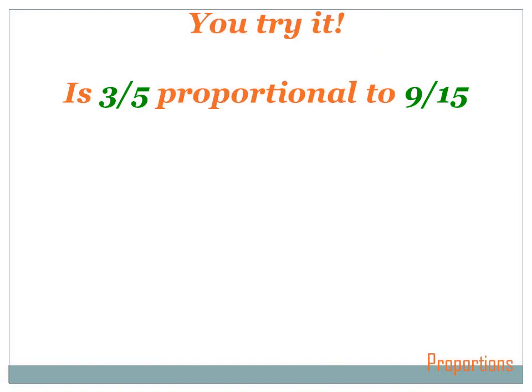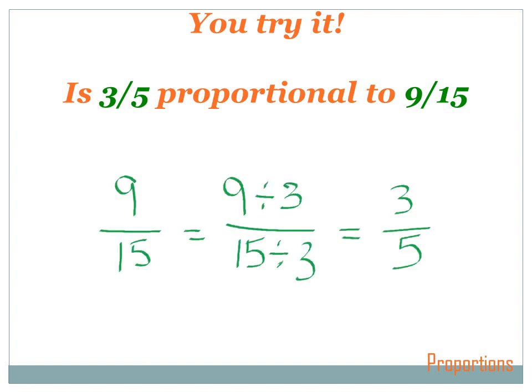You try this one — hit your pause button, do the problem, and then hit your forward key to go to the answer. Is three-fifths proportional to nine over fifteen? I can't reduce three over five — it's as simplified as I can get. But I can reduce nine over fifteen: dividing by three gives three over five, which is the other fraction. So the two fractions are equal and they are proportional.